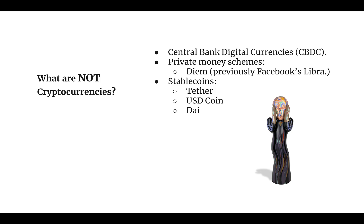If the above is the case, then by definition, currencies that are created and managed by central banks — or so-called central bank digital currencies, CBDCs — are not cryptocurrencies, even if they mimic all the motions. Private money schemes are also not cryptocurrencies. These include systems such as Facebook's Diem, previously known as Libra, and the so-called stablecoins such as Tether, USD Coin, and DAI, amongst others, as they only import to the system the flaws and risks of financial institutions, central banking, and government-sponsored fiat money that cypherpunks were trying to avoid in the first place.